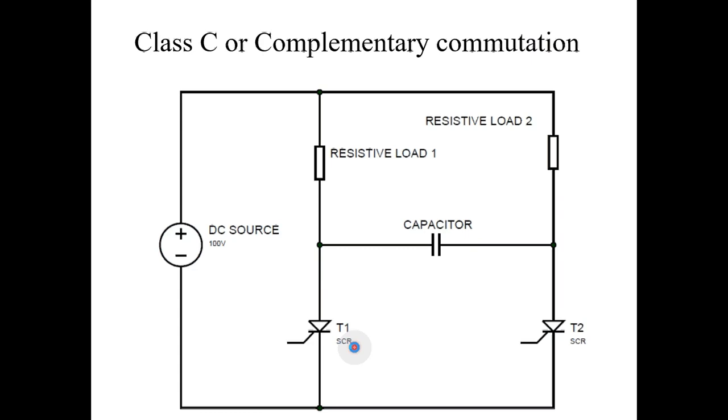This will commutate the main thyristor 1. And when the capacitor becomes fully charged with left side plate positive and right side plate negative, it becomes open circuited.